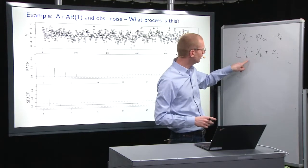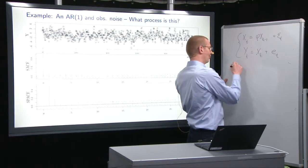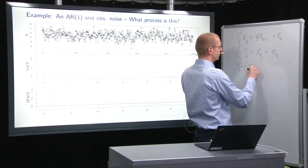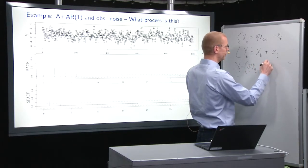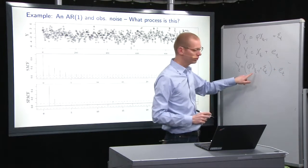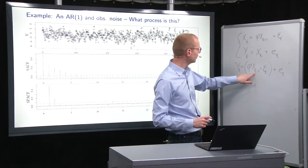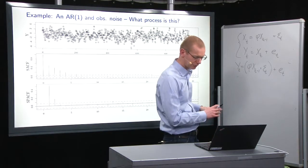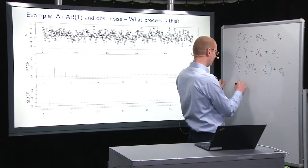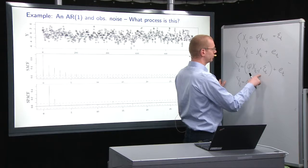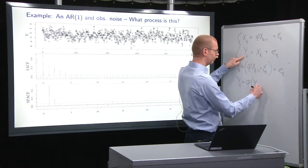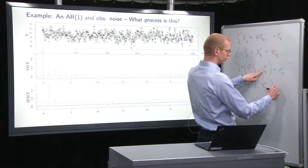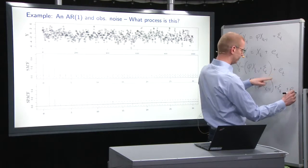Now, what we'll do then is look at yt and try to insert xt. So what we get here is that yt is equal to what we have up here. So that's phi xt minus 1 plus epsilon t plus et. Now, let's look at what we have internally here. xt minus 1, what is that equal to? Let's look at what we have up here and see, well, we can take it from there. So we have yt equals phi and then xt minus 1 here is equal to yt minus 1 minus et minus 1.